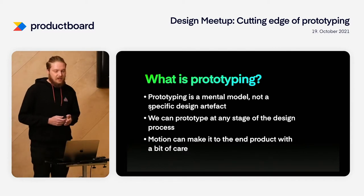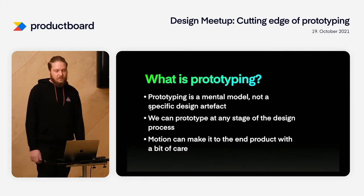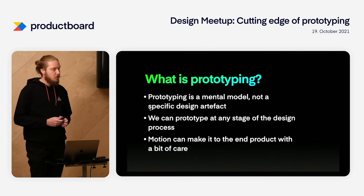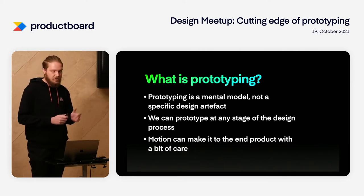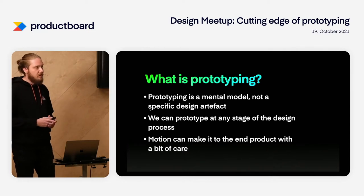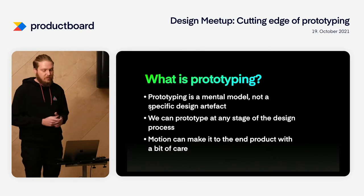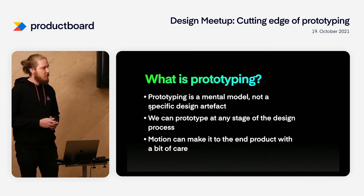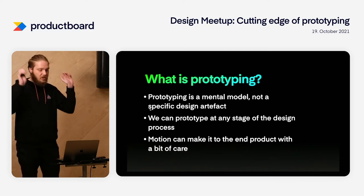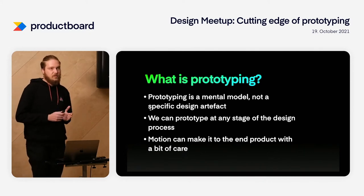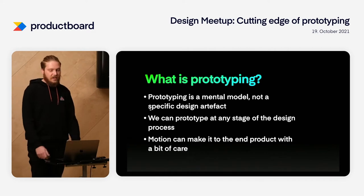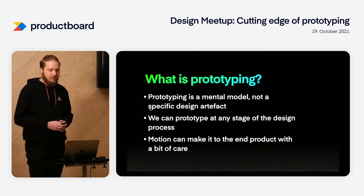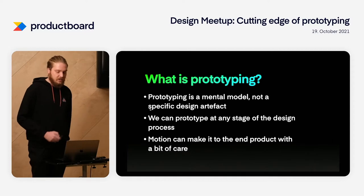There are three main points I want to make today. The first is that prototyping is a mental model, not a design artifact or a tool called prototyping. I think prototyping is just a way of thinking — part of the whole design process. We can do prototyping from the very early stages up until final engineering implementation. There's no strong distinction between design tools and prototyping tools. And the third point is that motion can make it to the final product with a little bit of care — it doesn't have to be thrown away or kept just for Dribbble.